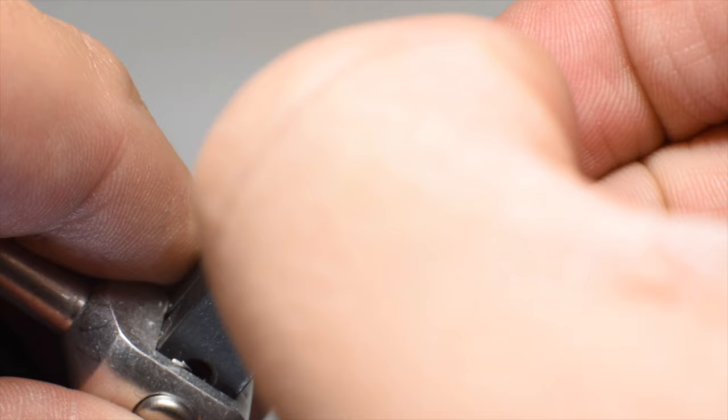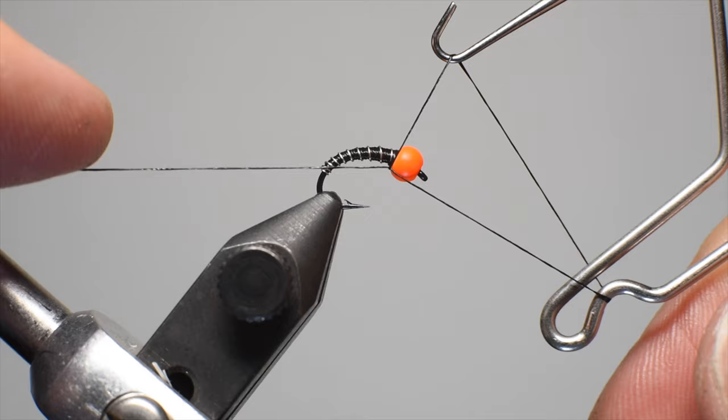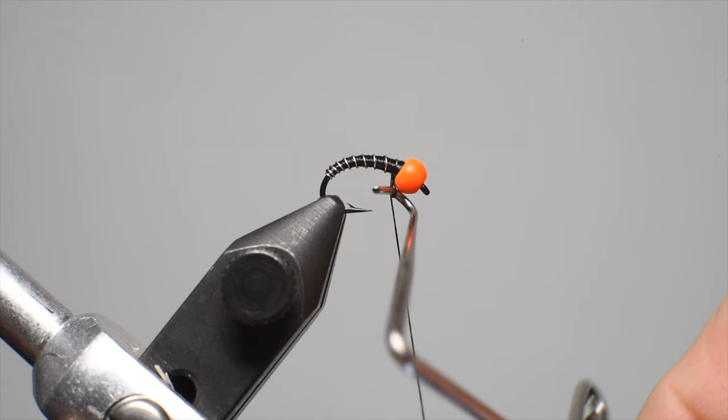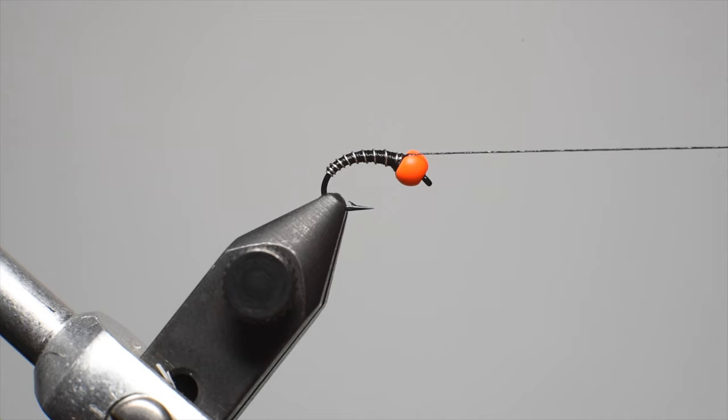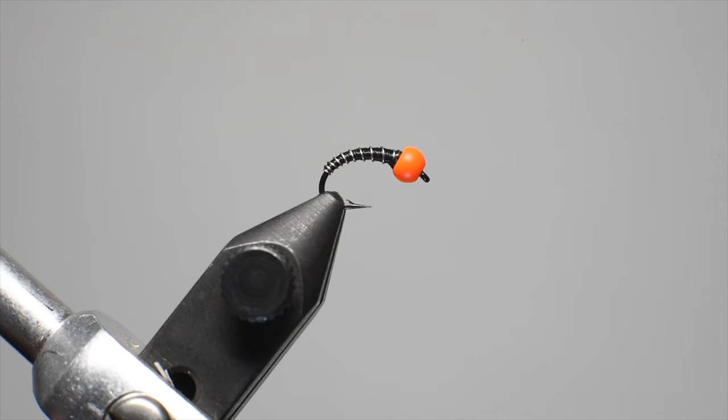So we'll go ahead and do a single whip finish and we'll then coat it with some UV. I like using a thin UV because it kind of penetrates into the underbody and allows there to be kind of that dimple effect across the wire to thread or nano silk in this case.